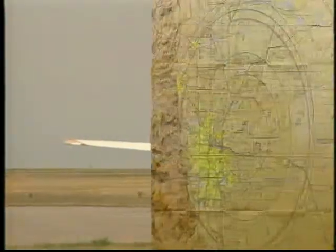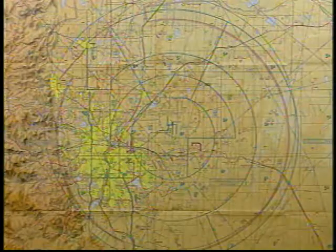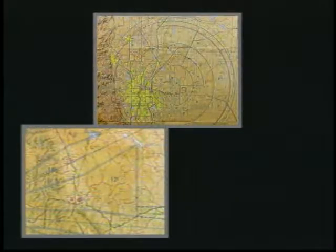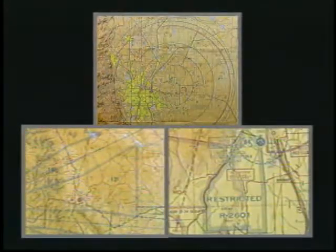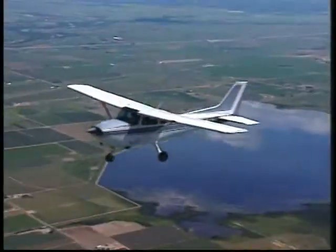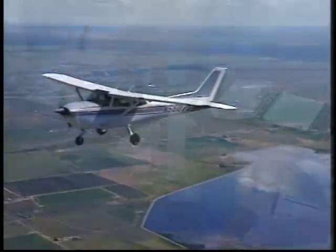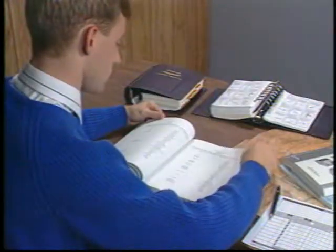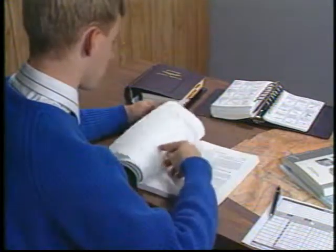The chapter on airspace describes the various forms of controlled, uncontrolled, and special use airspace and their operational requirements. Since portions of this chapter are changed frequently, it's a good idea to review it periodically.